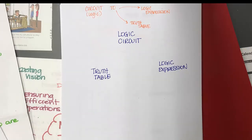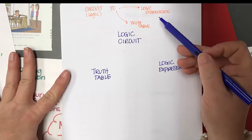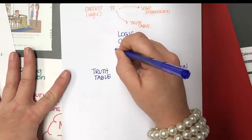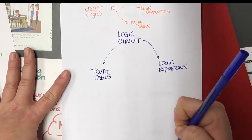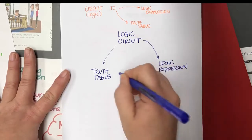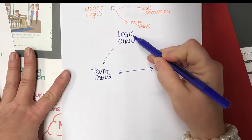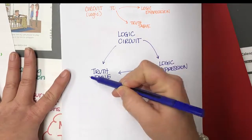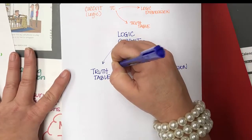We're going to talk about how you move from a logic circuit with AND, OR, and NOT gates to both logic expressions and truth tables, because no matter which one of these things you have, you should be able to move to either one. Today we're going to focus on how to get from the logic circuit to the expression and the truth table.